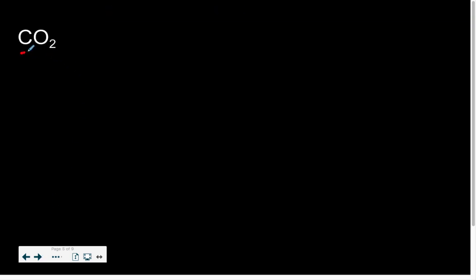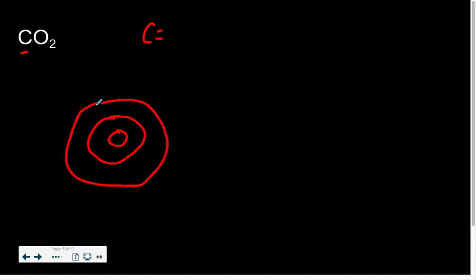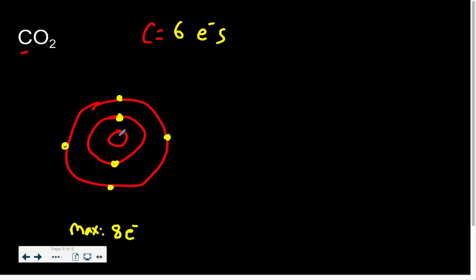Let's look at carbon. Carbon has atomic number six, so it has six electrons. Drawing the Bohr model for carbon: the first ring holds two electrons, and the second ring holds four more, giving carbon four valence electrons on the outside shell. The full outer shell can take a maximum of eight, so carbon needs to reach eight electrons.